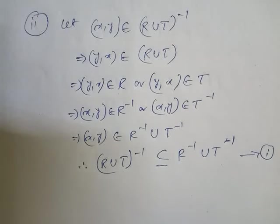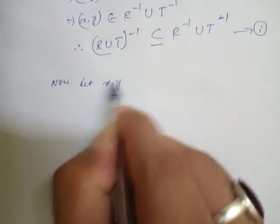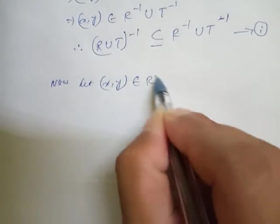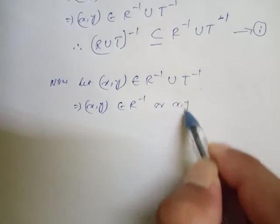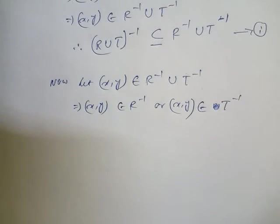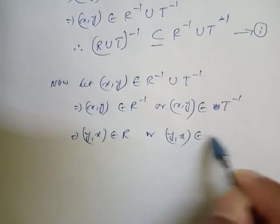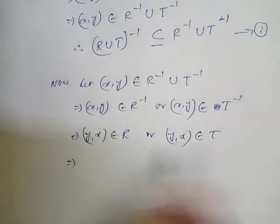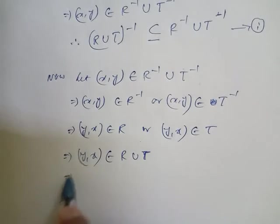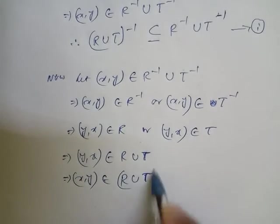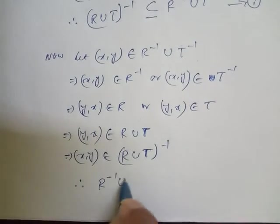Now for the converse, second part: let x comma y belong to R inverse or x comma y belongs to T inverse. Then y comma x belongs to R or y comma x belongs to T. Both these elements belong to R union T, so y comma x belongs to R union T, and then x comma y belongs to R union T whole inverse.